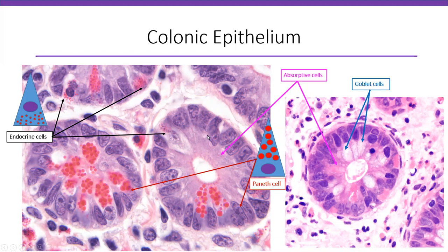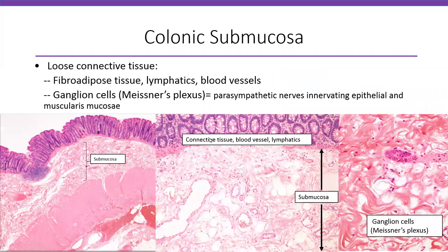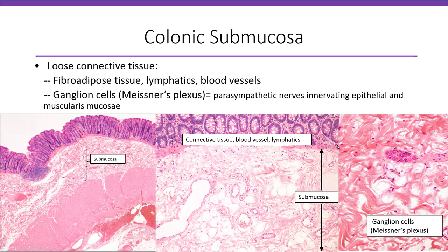The submucosa is a loose connective tissue containing fibroadipose tissue, some fibrosis, blood vessels, and also ganglion cells and nerve bundles — this is the Meissner's nerve plexus, a parasympathetic nerve that innervates the epithelium and muscularis mucosa.